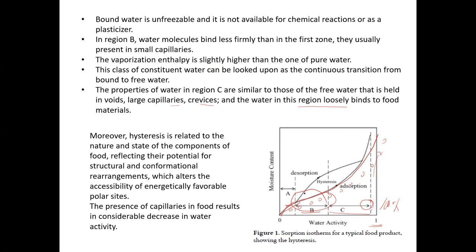Hysteresis is related to the nature and state of food components, reflecting their potential for structural and conformational rearrangement. For example, if spinach or methi is dehydrated at 80°C for four hours and then rehydrated, it is not possible to return them to the same state as fresh spinach. The nature and state of the components — like cellulosic material in an immature or mature leafy vegetable — will obviously affect this process.